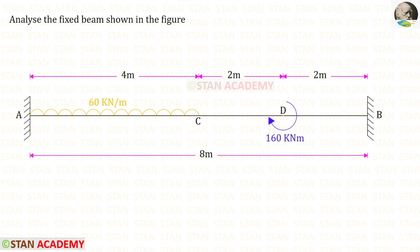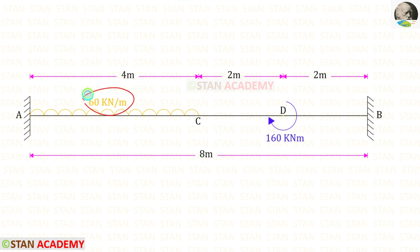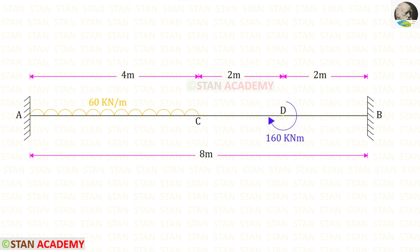Hello everyone. Today we are going to analyze this fixed beam. In this beam there is a uniformly distributed load of 60 kilo Newton per meter. It acts in the left half and there is a concentrated moment of 160, acting at a distance of 2 meters from the right support and acting in the clockwise direction. Using the moment area method, we are going to find the vertical reaction RB and the moment MB.